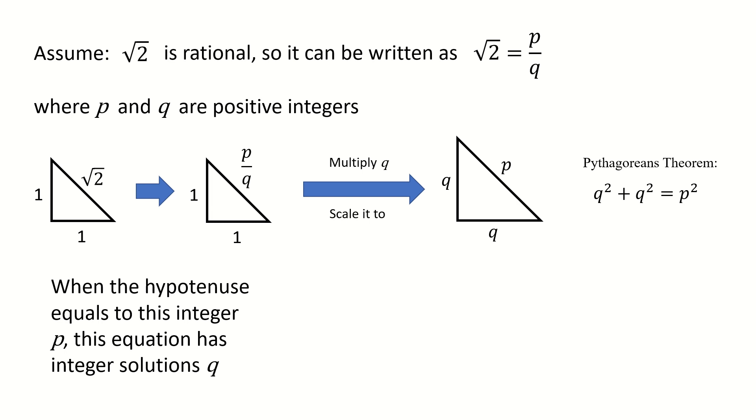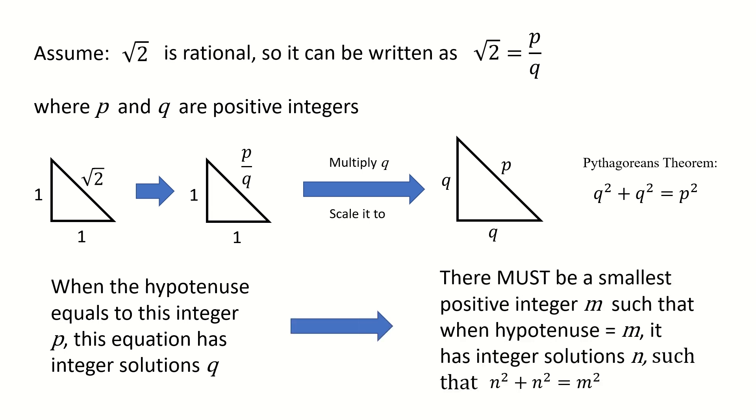And this indicates that there must be a smallest positive integer m such that when the hypotenuse equals m, this equation has integer solution n, such that n² + n² = m².